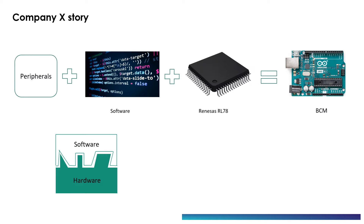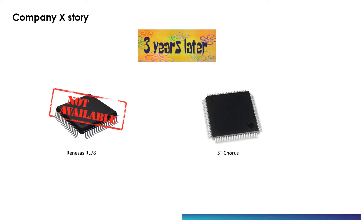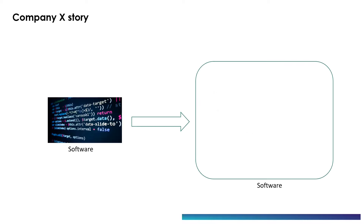Now let's take an example of automotive company X. Company X is working on a body control unit project. They choose the RL78 controller, write the software, flash it, and it works well. This software was designed keeping the RL78 controller architecture in mind. After some years, Renesas decides to increase the price of the RL78 controller. This cost is too high for company X, so they decide to shift to a new controller — suppose they choose the S32 Chorus, which has a totally different architecture than the previous one.